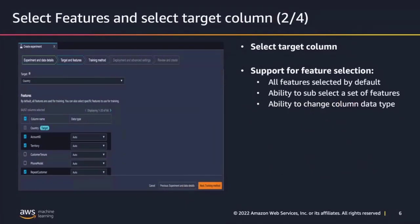In the next screen, you get the option of selecting features and your target column. By default, all features are selected. The only thing required is to select the target column for your experiment. You also have the ability in feature selection to change the data type — the auto-inferred data type that Autopilot inferred initially. So if the data type was inferred as text and you want to change it to numeric, you can absolutely do that.